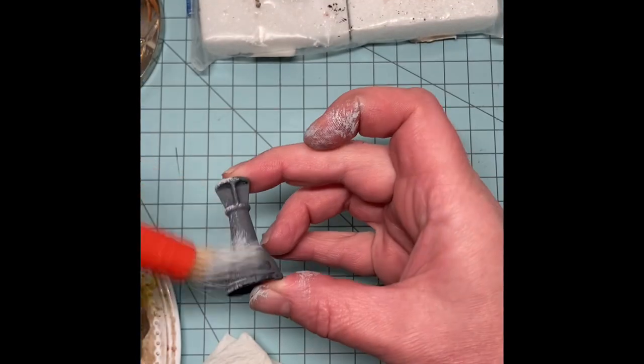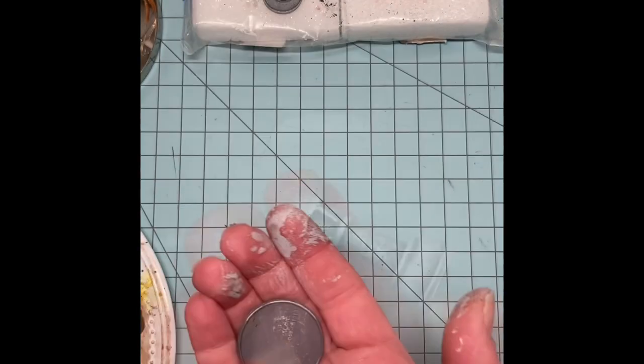While the mod podge dries, take some light gray paint and brush over the rook, the plate, and the king piece.